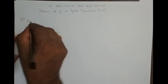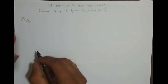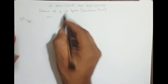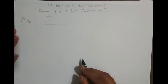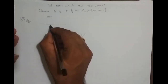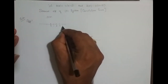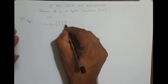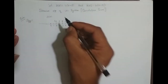Step 1 is to plot x of n and h of minus n. x of n is u of n shifted right 2 times. So it goes 0, 1, 2, 3, 4 — it starts from 2 and goes to infinity, and its amplitude is 1. This is at n equal to 0.